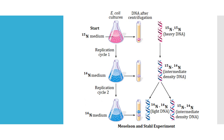Then they extracted Escherichia coli after 40 minutes, meaning two replication cycles were completed. They extracted DNA from the bacteria and after centrifugation found two layers of DNA. The upper layer is the lighter DNA where both strands are N14, and the lower layer is the intermediate DNA where one strand is the old N15 strand and the other is the newly formed N14 strand.